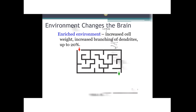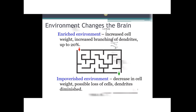As you might anticipate, the brains of rats in the enriched environment had more branching of dendrites and somewhat increased cell weight. Moreover, these structural changes resulted in the rats being better able to solve complex maze problems. Diamond also reported that wild rats from their natural environment had even more dendritic growth than the lab rats, even those raised in enriched environments. Importantly, Diamond found the same results regardless of whether the rats were infants, adolescents, middle-aged, or elderly.